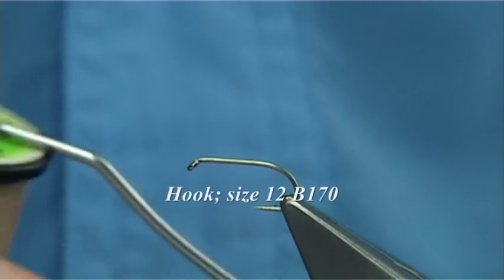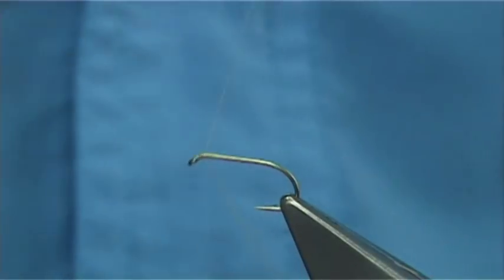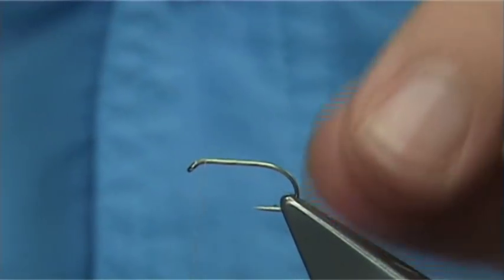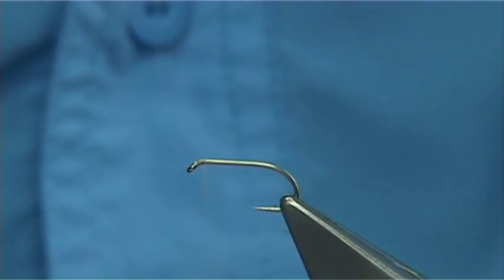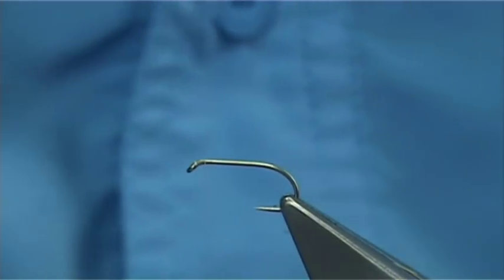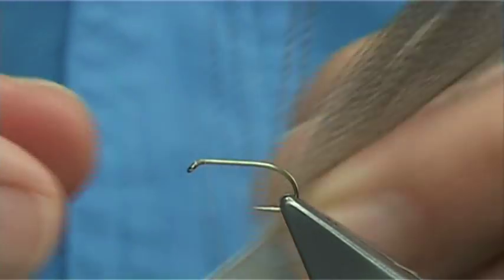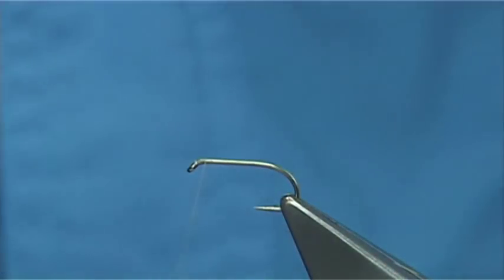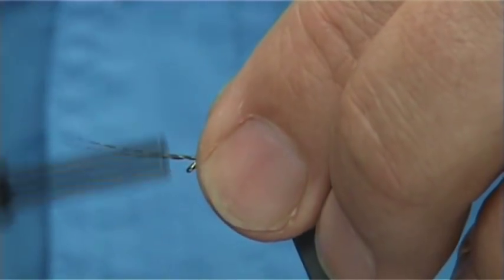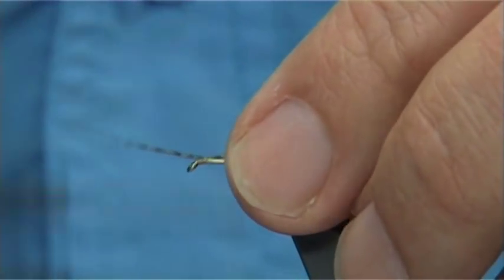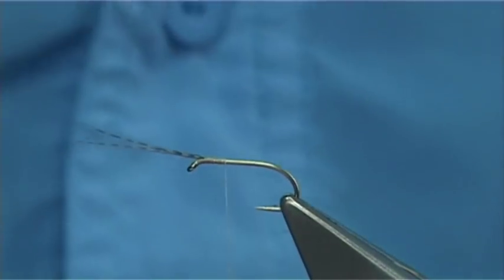The thread I'm going to be using is a uni thread in tan, in 8-0. I've waxed the thread, so I'm going to start at the eye, doing three or four turns, and take away the waste. Now I'm going to put horns on this fly using a bronze mallard. This is a large bronze mallard feather. All I need is two of the fibers, tear them off, and then just tie these forward with the eye, just slightly longer than the length of the hook. Work my way down and remove the excess.